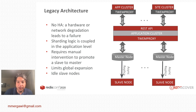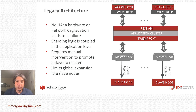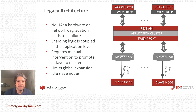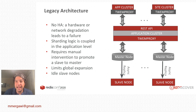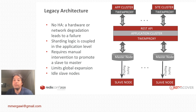The problems we faced with this architecture were: it was not highly available, any network degradation led to failure, and the sharding logic was coupled within the application cluster. That meant any failure in the Redis nodes required manual intervention to promote a slave to a master. It also had limits to global expansion.